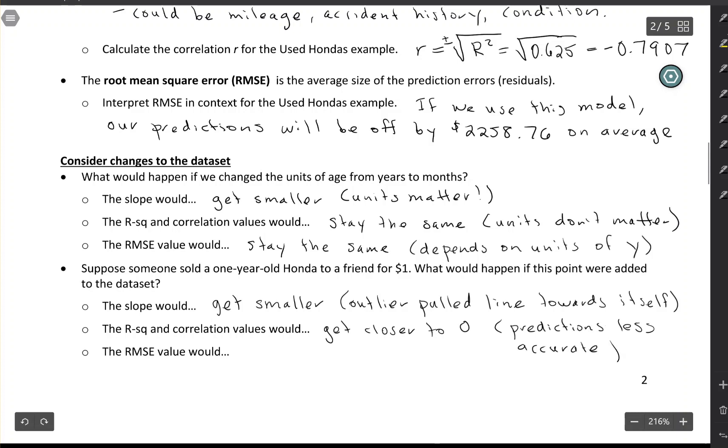And then another way to say that the predictions are less accurate is looking at the root mean square error. The root mean square error would get larger because we've got larger residuals. Our predictions are less accurate.